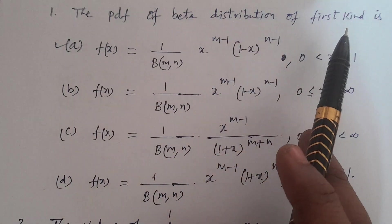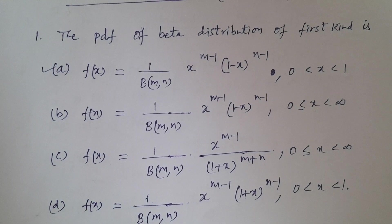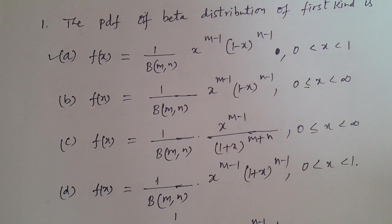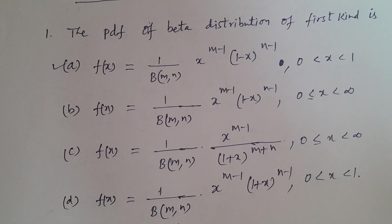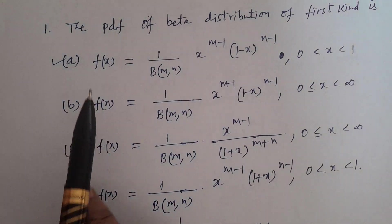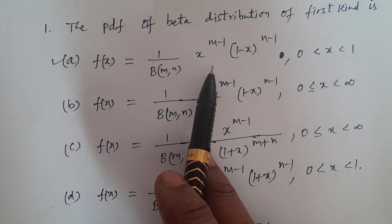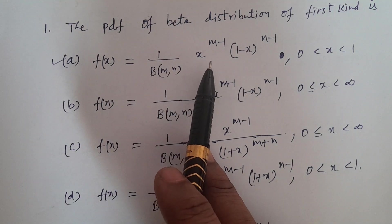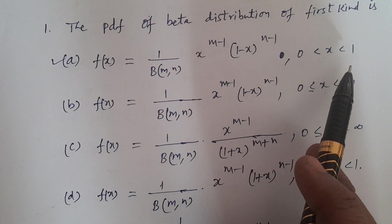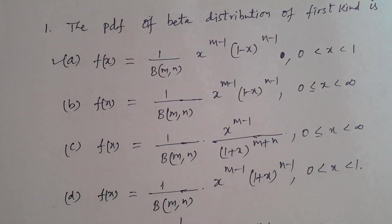Now in Telugu — the probability density function, the PDF of beta distribution of first kind. The correct answer is Option A: f(x) = 1/β(m,n) · x^(m-1) · (1-x)^(n-1), 0 < x < 1. That is the correct answer.